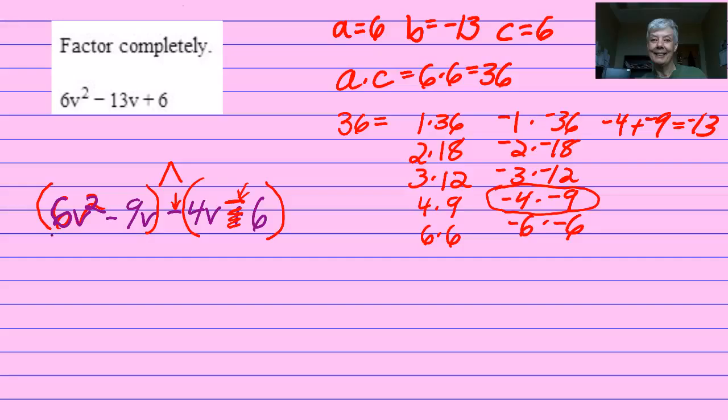6V squared is 2 times 3 times V times V, and 9V is 3 times 3 times V. 4V minus 6 is 2 times 2 times V, and 6 is 2 times 3. So negative 6 is negative 2 times 3.